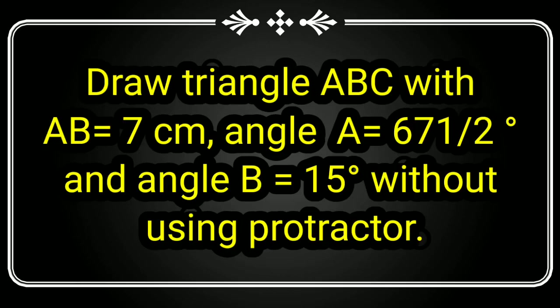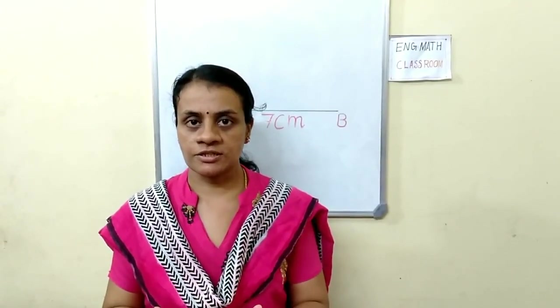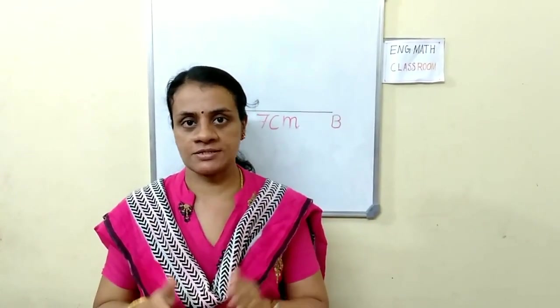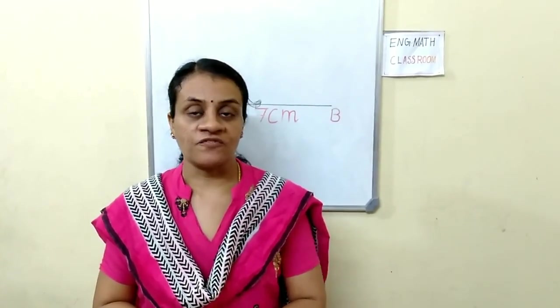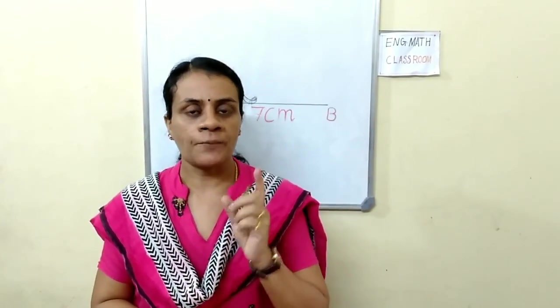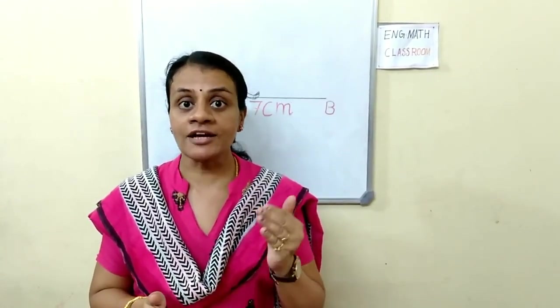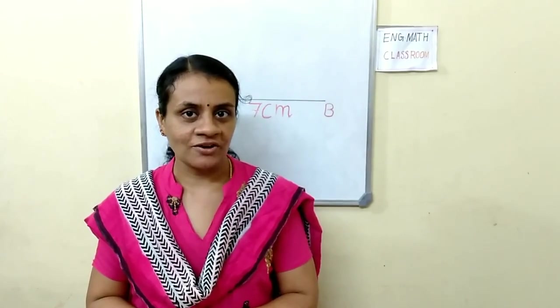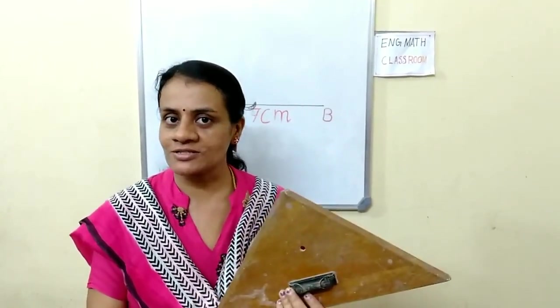Now draw triangle ABC with AB equals 7 cm, angle A equals 67 and a half degrees, and angle B equals 15 degrees — without using a protractor. In this question we cannot use a protractor, so we need another way to measure angle A and angle B. For that, let me introduce two pairs of set squares.